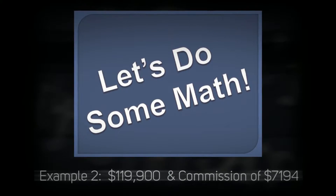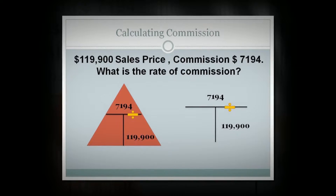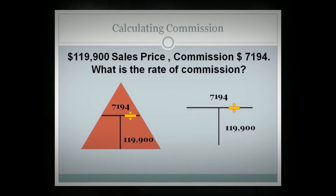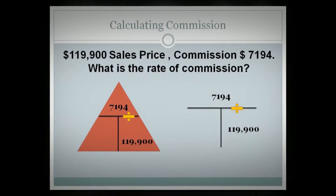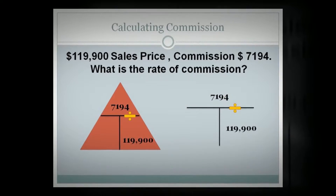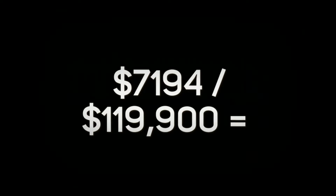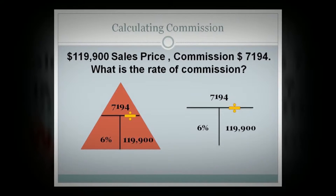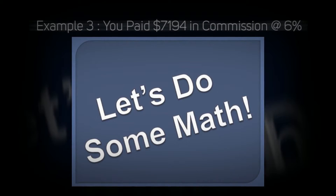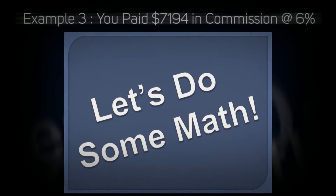Example two: you have a sales price of $119,900 and a commission paid of $7,194 — what's the rate of commission that was paid? To calculate, you put the sales price of $119,900 in the bottom right-hand corner, you put the portion of $7,194 on the top, and then you put into your calculator $7,194 divided by $119,900, and that gives you a commission rate of 6%.